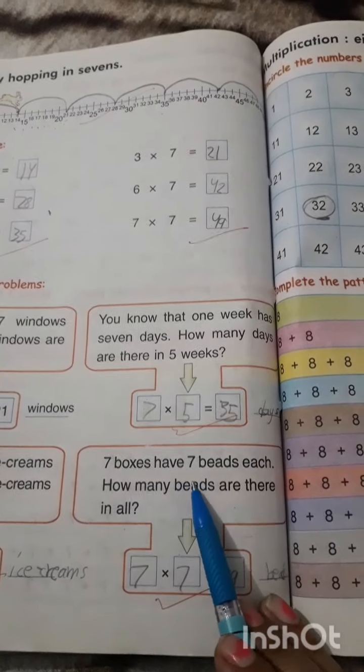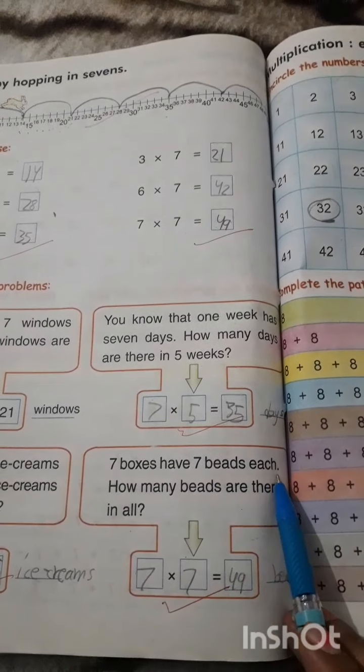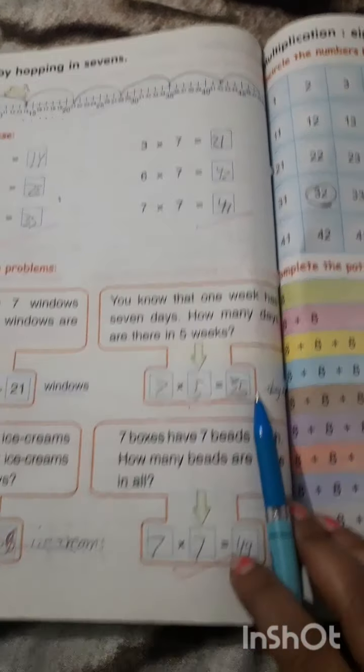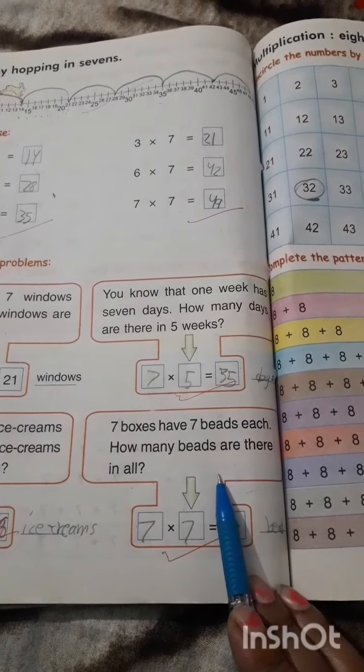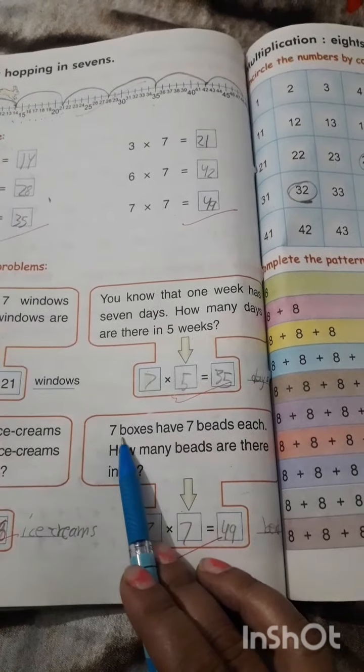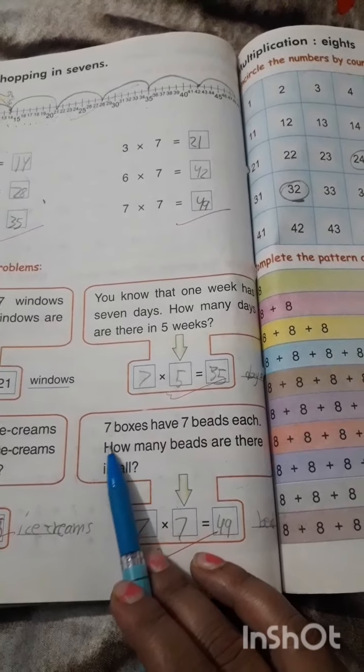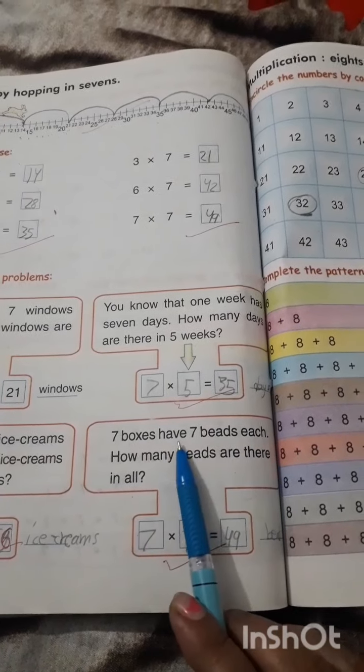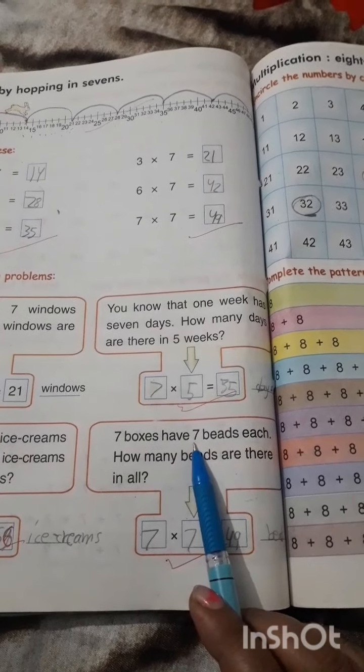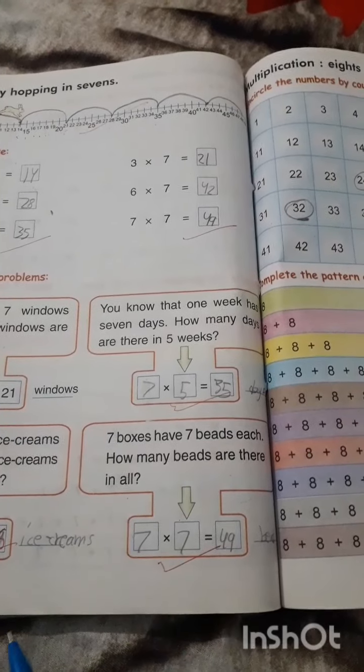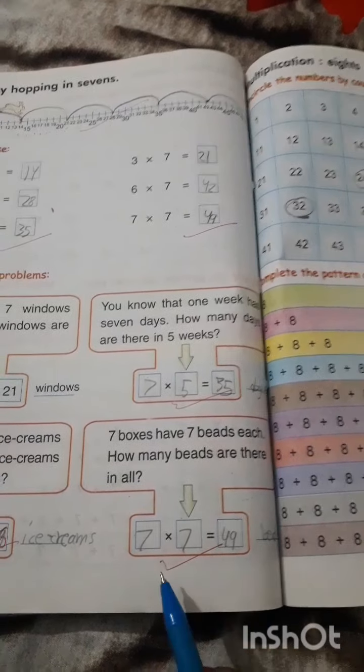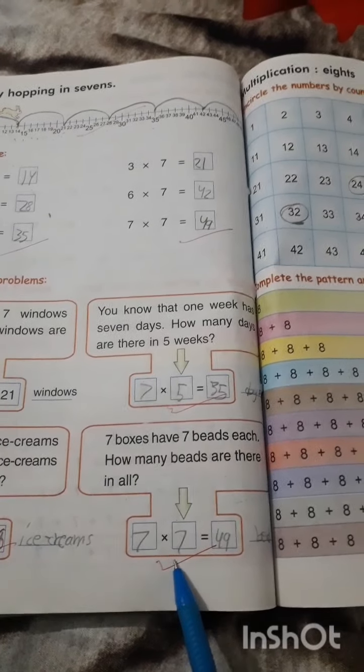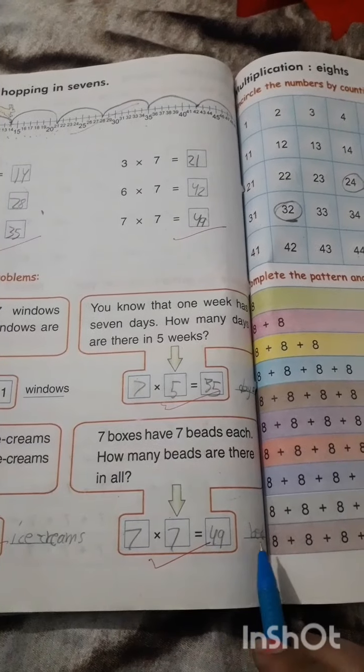7 boxes have 7 beads each. How many beads are there in all? Number of boxes, 7. Number of beads in each box, 7. Total beads in 7 boxes. 7 multiply 7. 7 times 7. 7 7s are 49 beads.